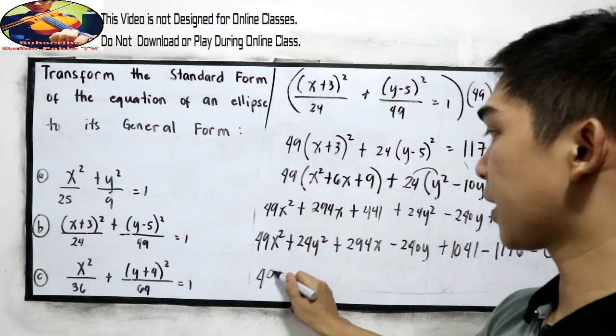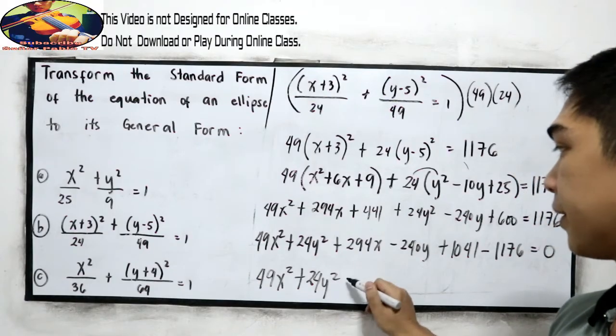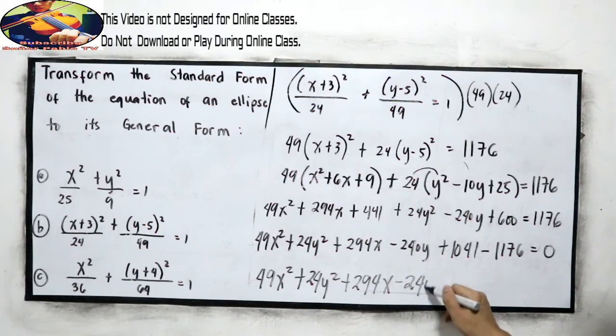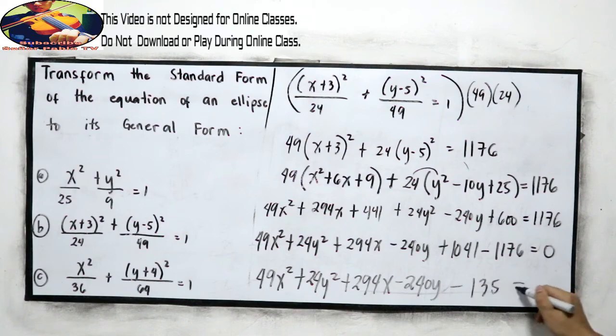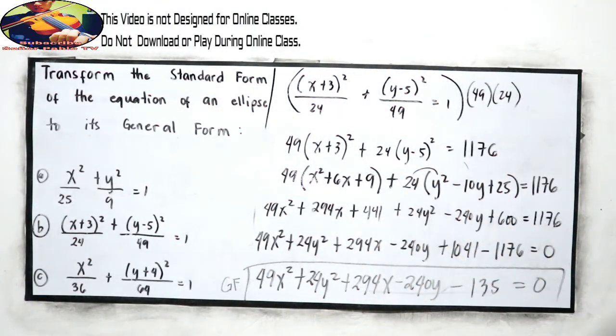So, we can combine this, so that would be 49x squared plus 24y squared plus 294x minus 240y. Combining, we have negative 135 is equal to 0. So, this will be our general form.